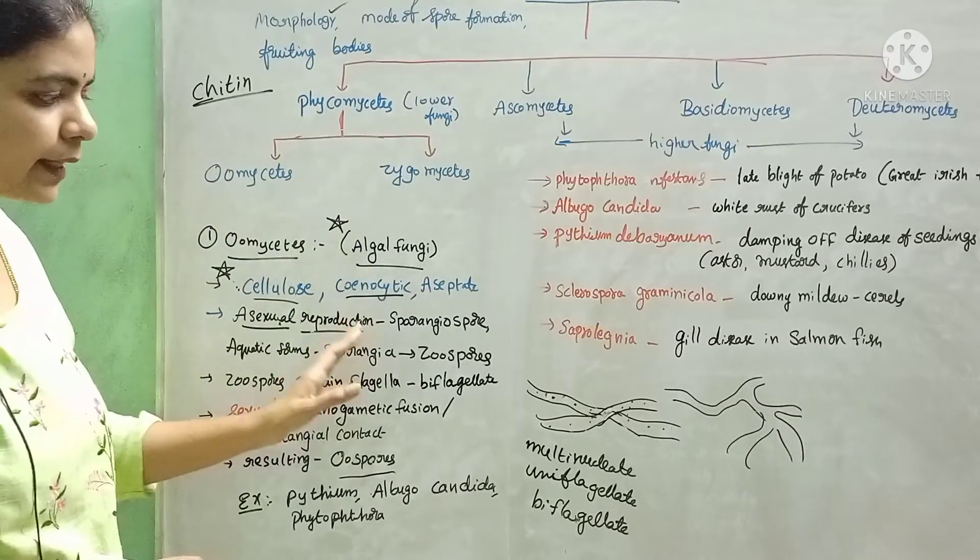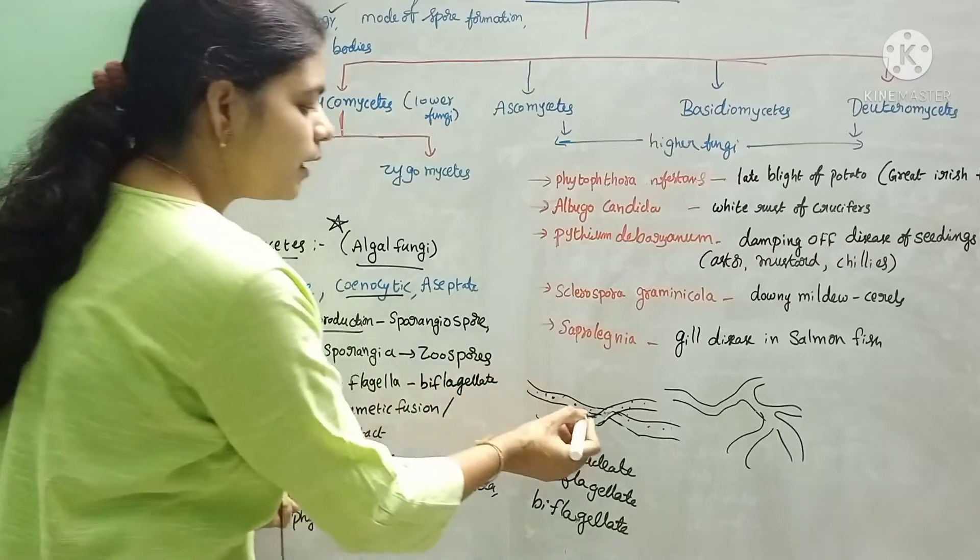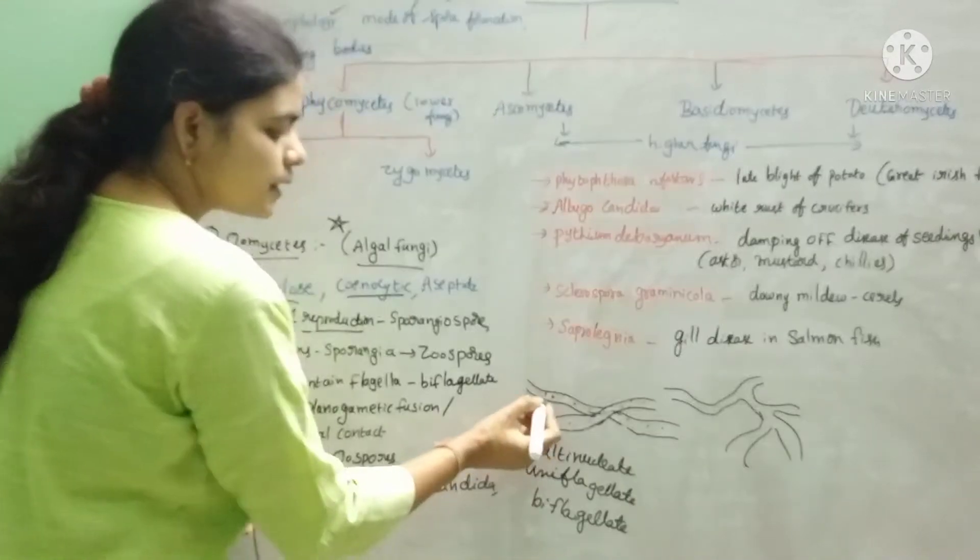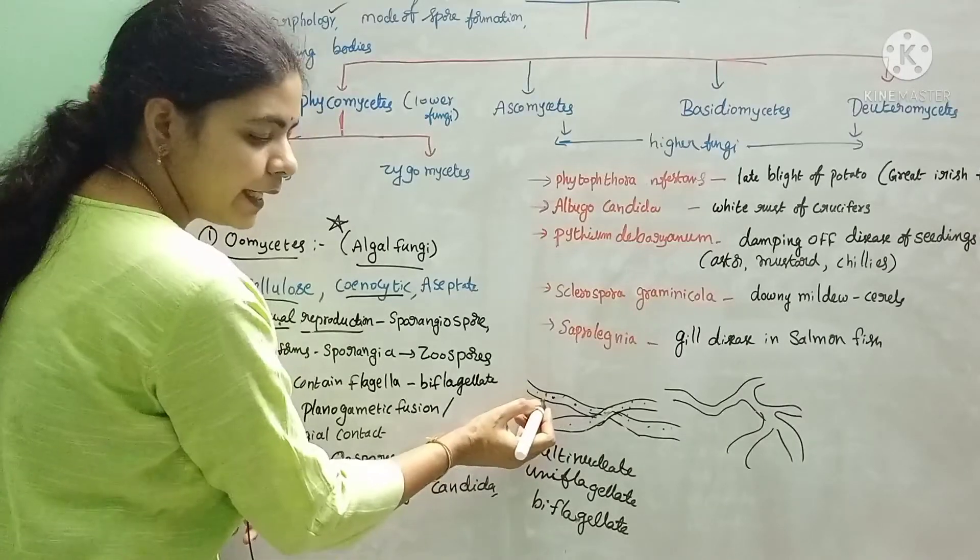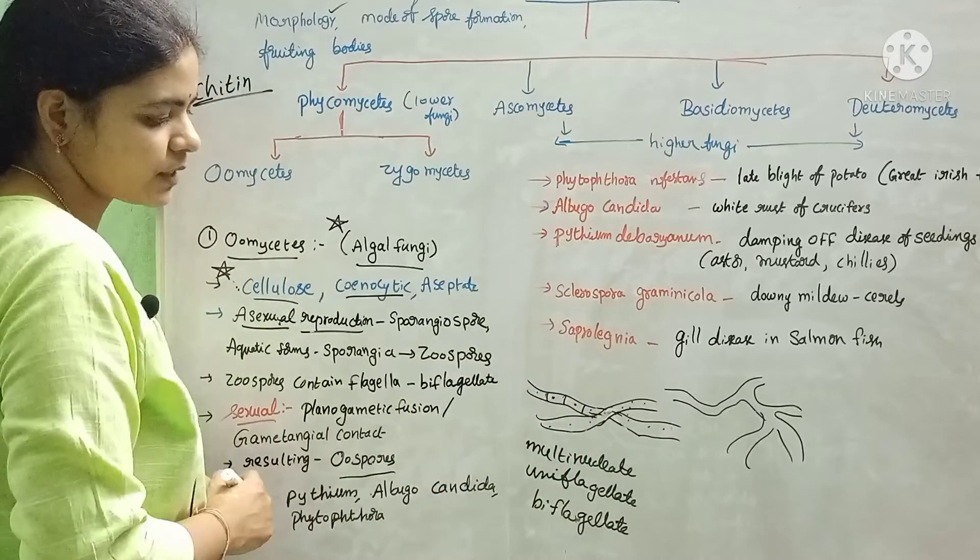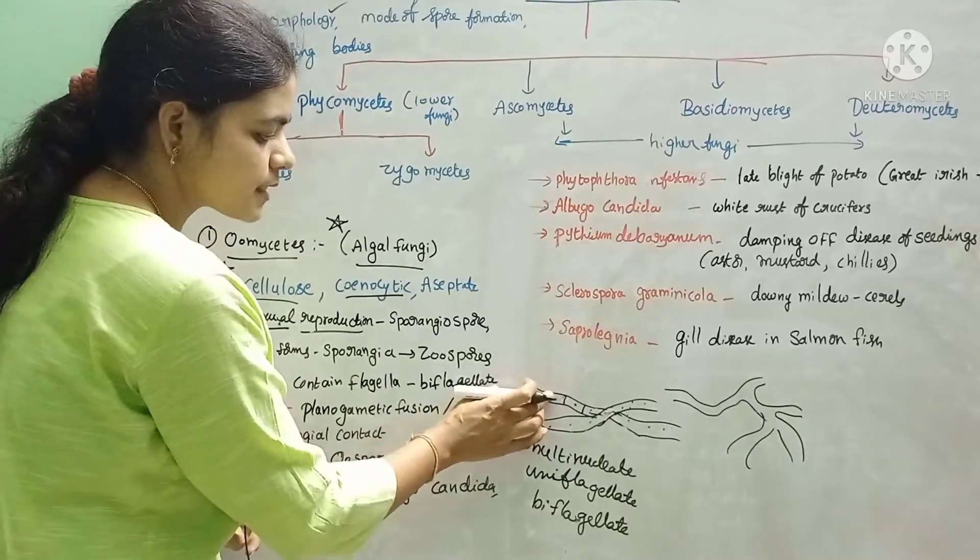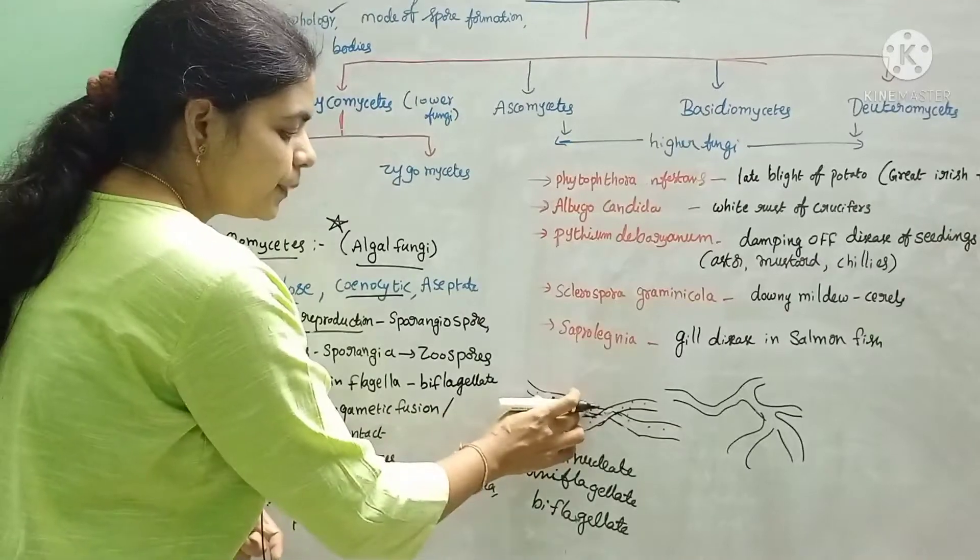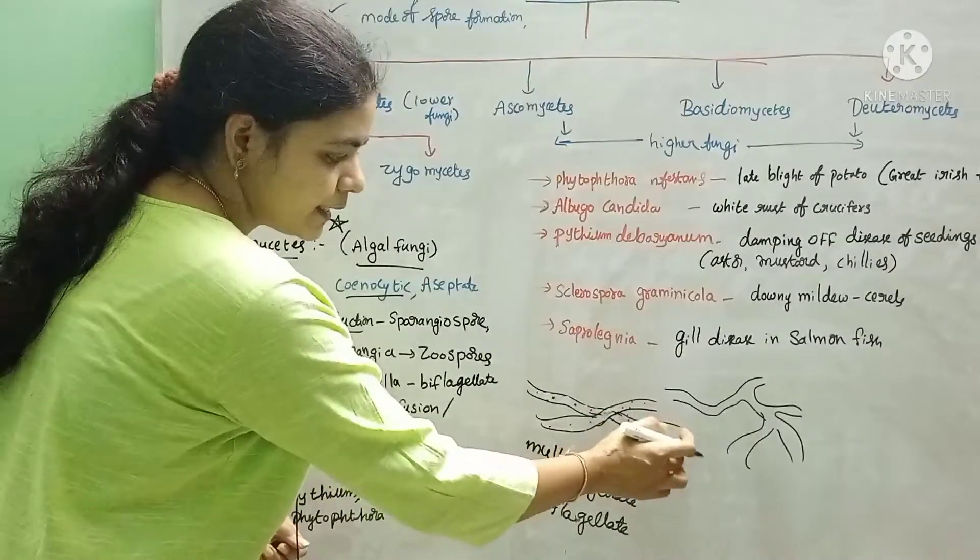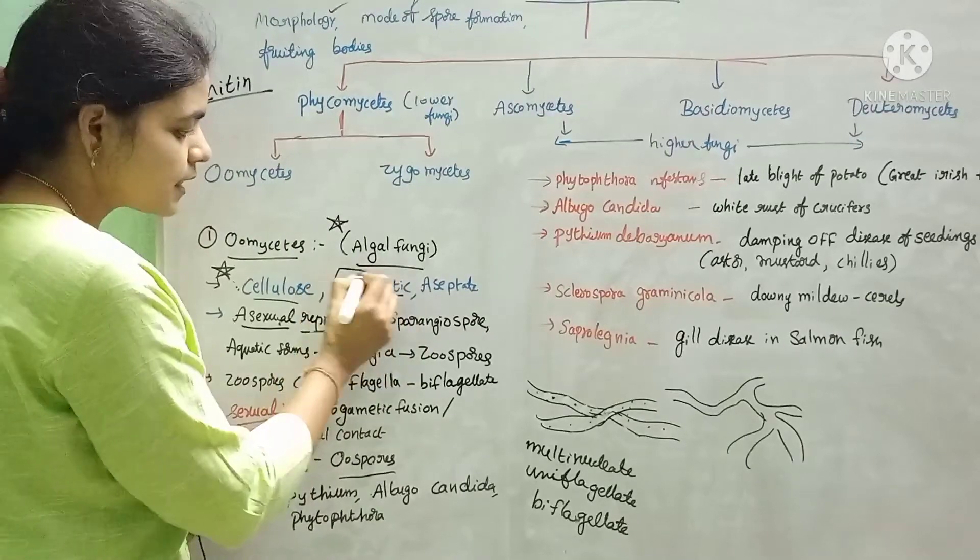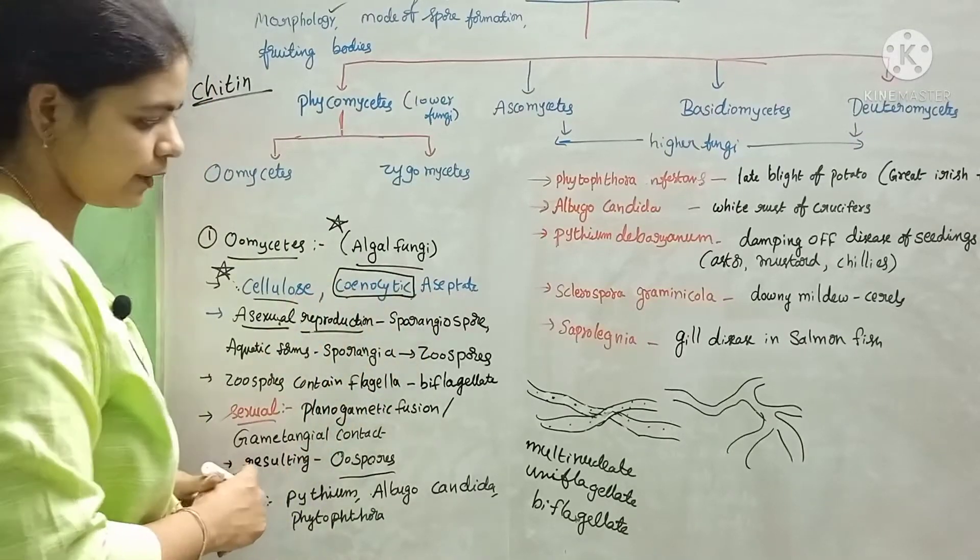These are lower fungi. Hence, the hypha structure is different from the remaining. The nuclei were not separated by septa. The septal formation is not seen in this lower fungi. Hence, they appear like multi-nucleated hyphae, which is also called coenocytic hyphae.